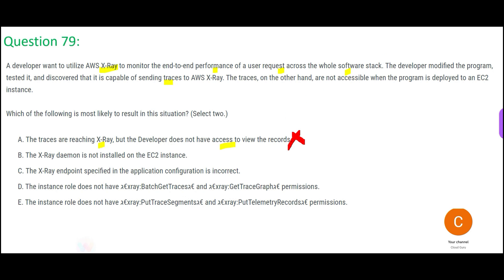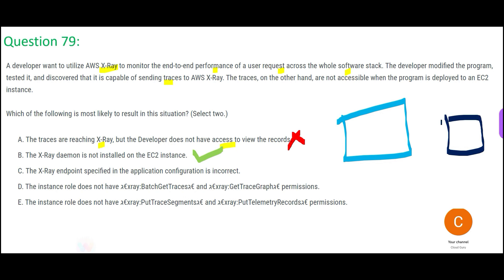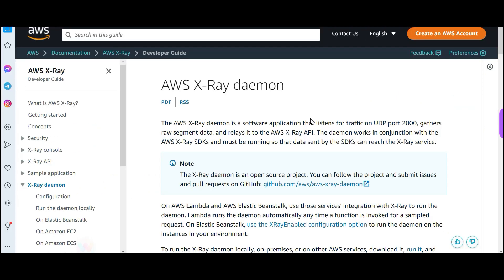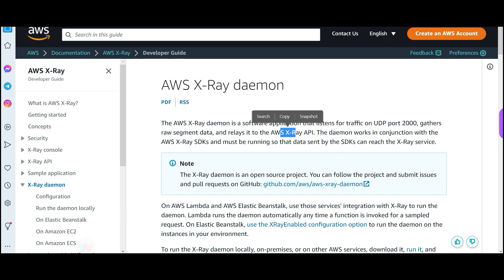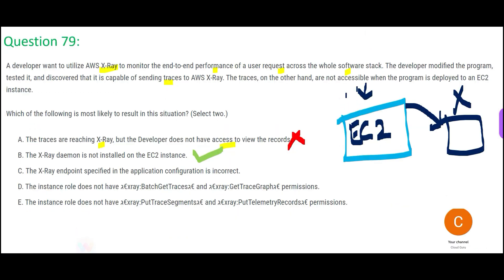Option B says the X-Ray daemon is not installed on the EC2 instance — and yes, this can be the problem. On the EC2 instance, you need an agent or daemon constantly running that sends traces to X-Ray. The X-Ray daemon is a software application that listens for traffic on port 2000 and relays data to the X-Ray API. If it is not installed, traces cannot be sent.